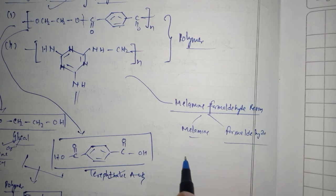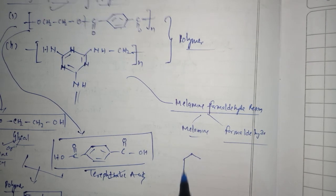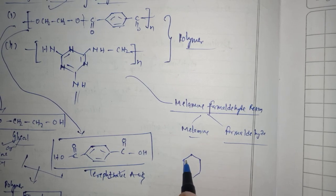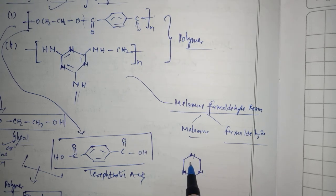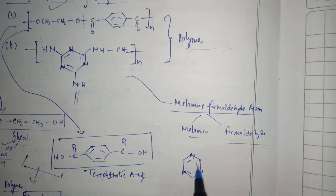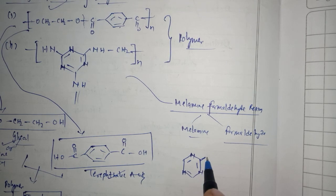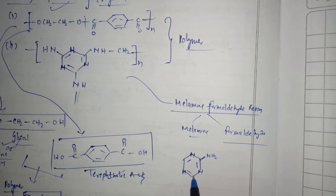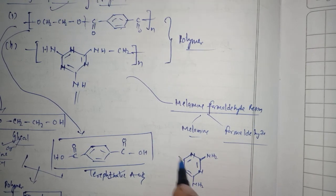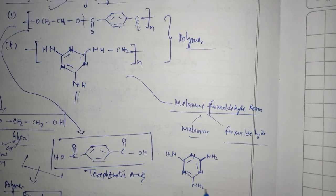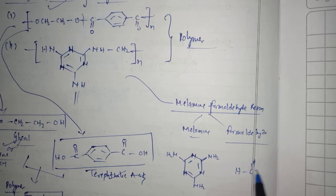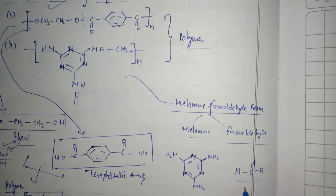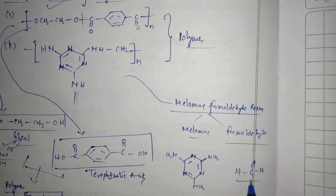Melamine can be shown in this way like ring structure, a six hexagon structure where three nitrogen atoms are present at three different positions, alternate position, and in between double bond is present. Then whatever the carbon location is there, there is NH2 here also NH2 and here also NH2. It is melamine. And another one is formaldehyde, that is HC double bond O. It is formaldehyde or you can say methanal.